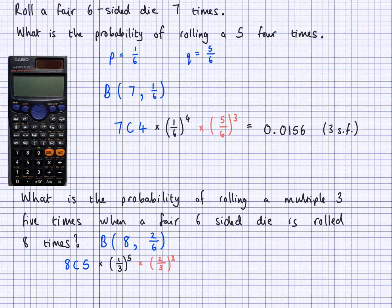Putting that into the calculator, the result is 0.0683 when rounded to three significant figures. So when we roll a fair six-sided die eight times, the probability of getting a multiple of three exactly five times is 0.0683. You can express this as a fraction or a percentage as well — decimal is also fine.